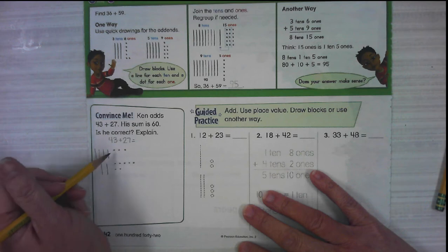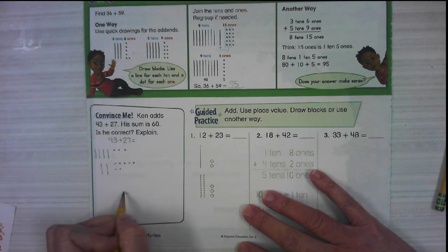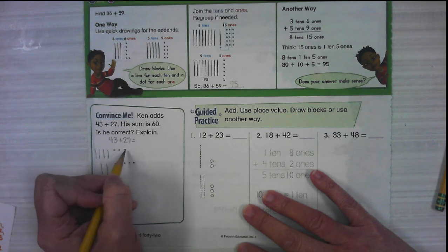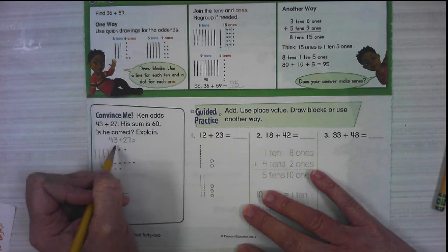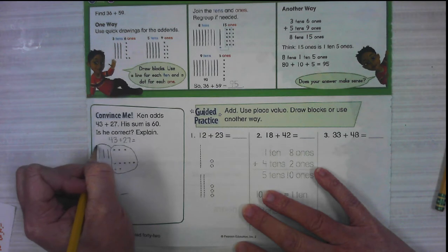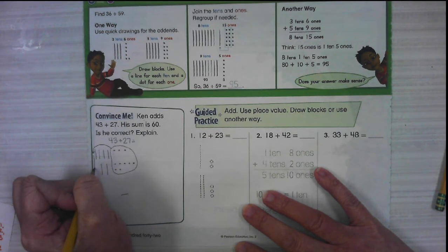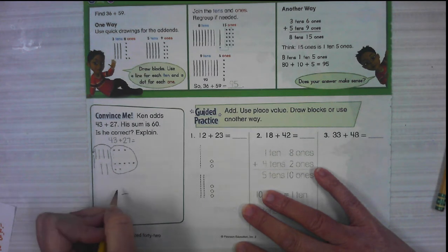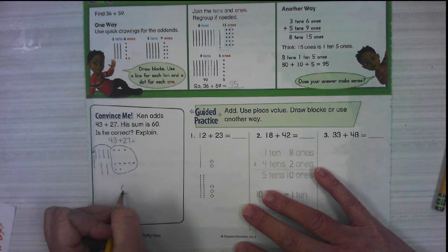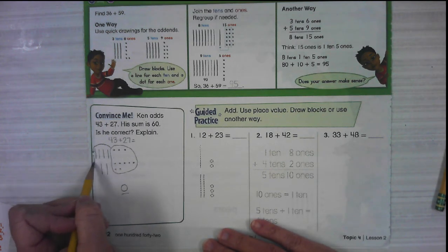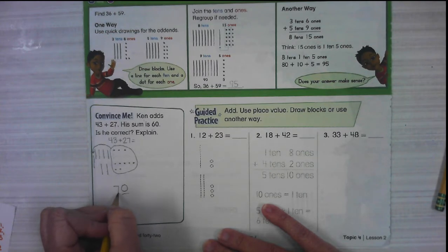So now if we put it together, we're going to start with our ones. We have one, two, three, four, five, six, seven, eight, nine, 10. We can't put a 10 in the ones place. So we need to regroup 10 ones to make a 10. I'm going to circle these and we're going to turn them into a stick of 10 over here. We're not going to count these anymore because now they're over here in the tens place. How many ones do we have left? Zero. And then we've got 10, 20, 30, 40, 50, 60, 70.